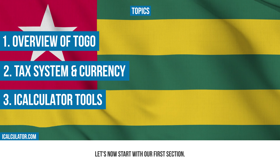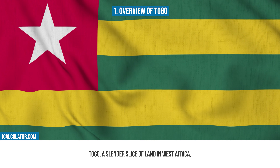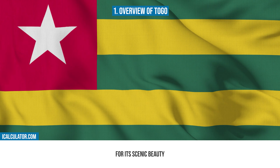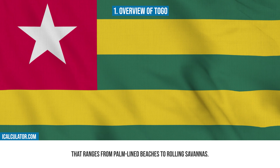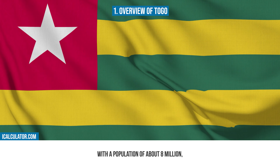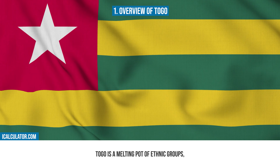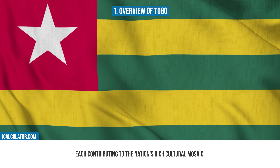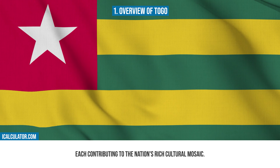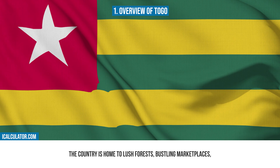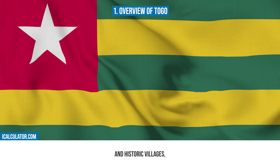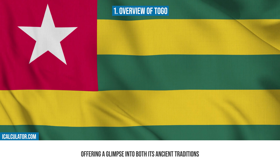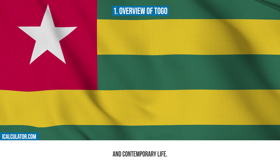Let's now start with our first section. Togo, a slender slice of land in West Africa, is noted for its scenic beauty that ranges from palm-lined beaches to rolling savannas. With a population of about 8 million, Togo is a melting pot of ethnic groups, each contributing to the nation's rich cultural mosaic. The country is home to lush forests, bustling marketplaces and historic villages, offering a glimpse into both its ancient traditions and contemporary life.